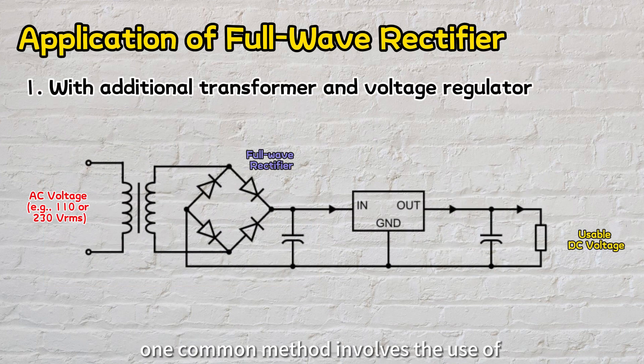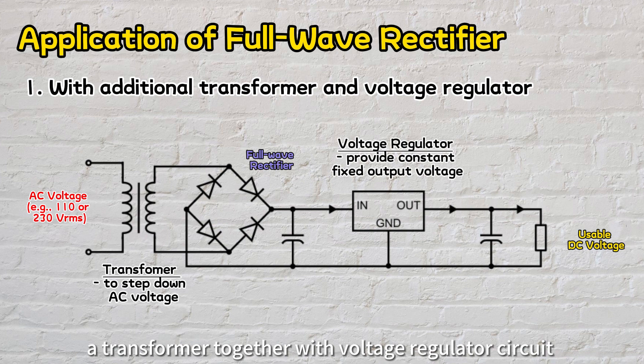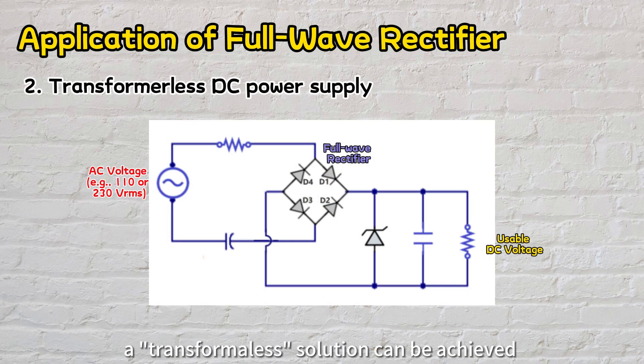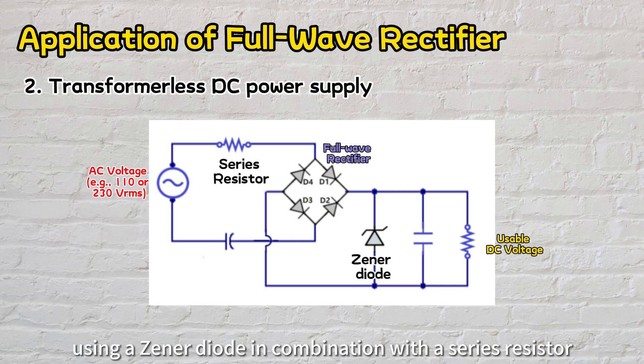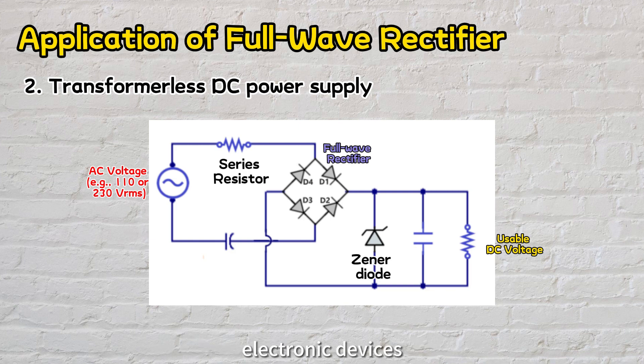To achieve this, one common method involves the use of a transformer together with voltage regulator circuit to step down the high AC voltage to the desired lower level. Alternatively, transformer-less solutions can be achieved using a Zener diode in combination with a series resistor to regulate the voltage to a lower level, ensuring safety and compatibility with electronic devices.